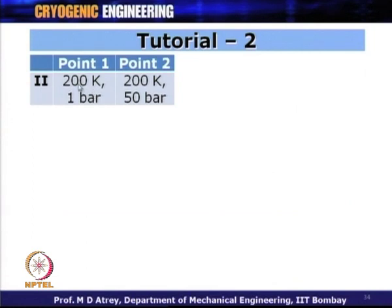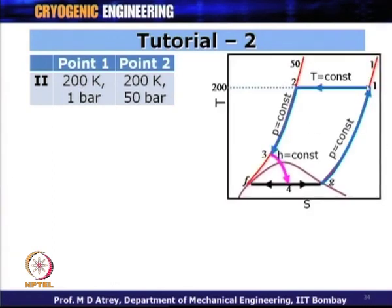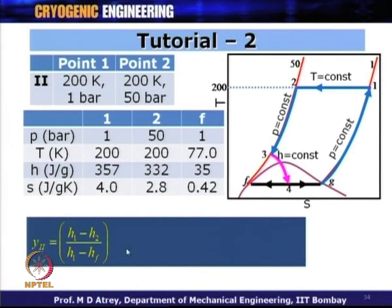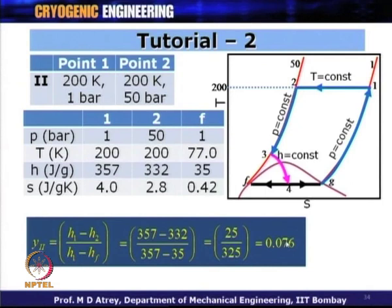For Case 2, the compression is now at 200 Kelvin (instead of 300 Kelvin), with the same pressure range 1 bar to 50 bar. Point 1 is at 1 bar and 200 Kelvin, point 2 is at 50 bar and 200 Kelvin; point F remains at 1 bar and 77 Kelvin. Calculating Y for Case 2 gives 0.076. Compared to 0.023 for Case 1, carrying out the compression at lower temperature gives a significantly higher yield.